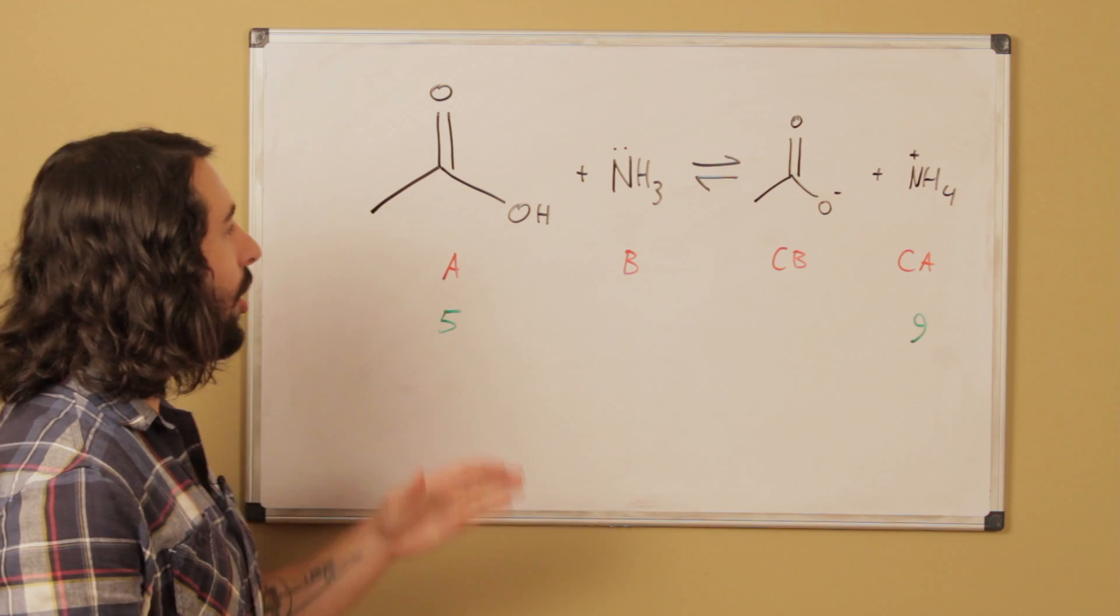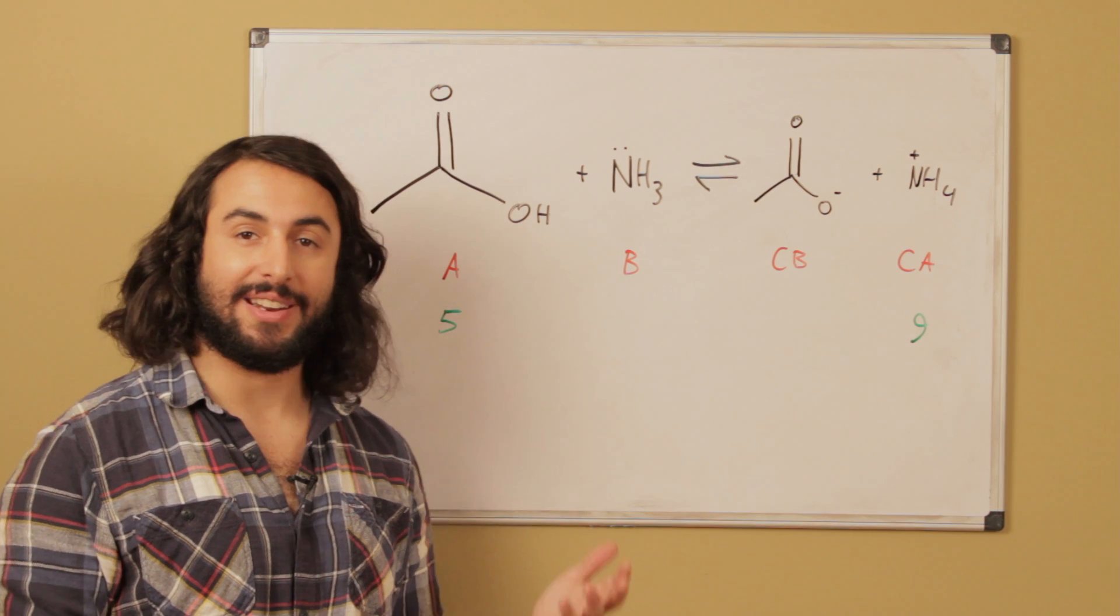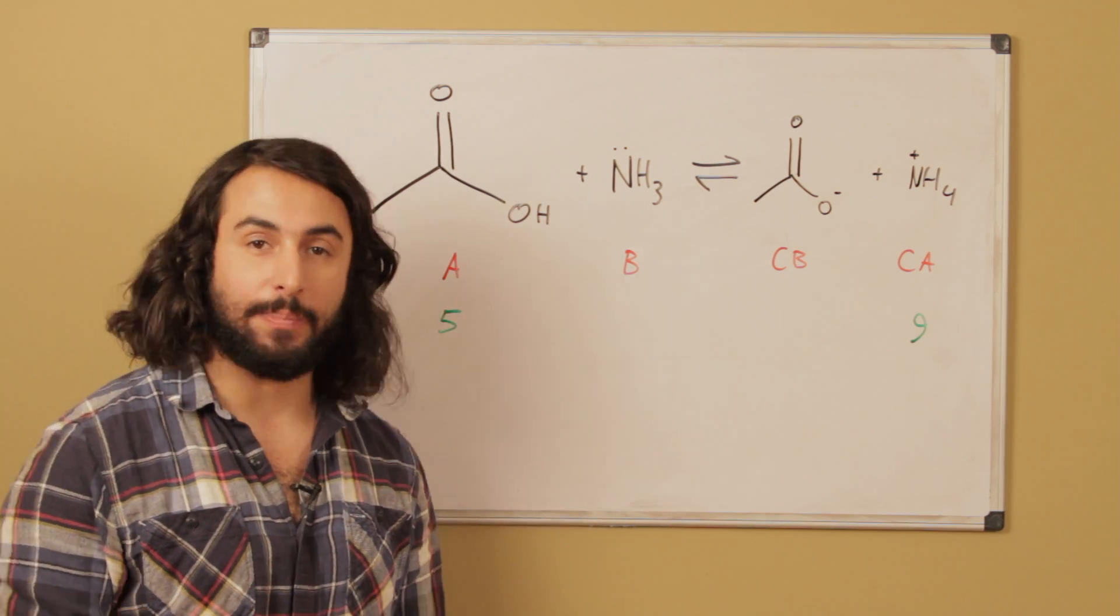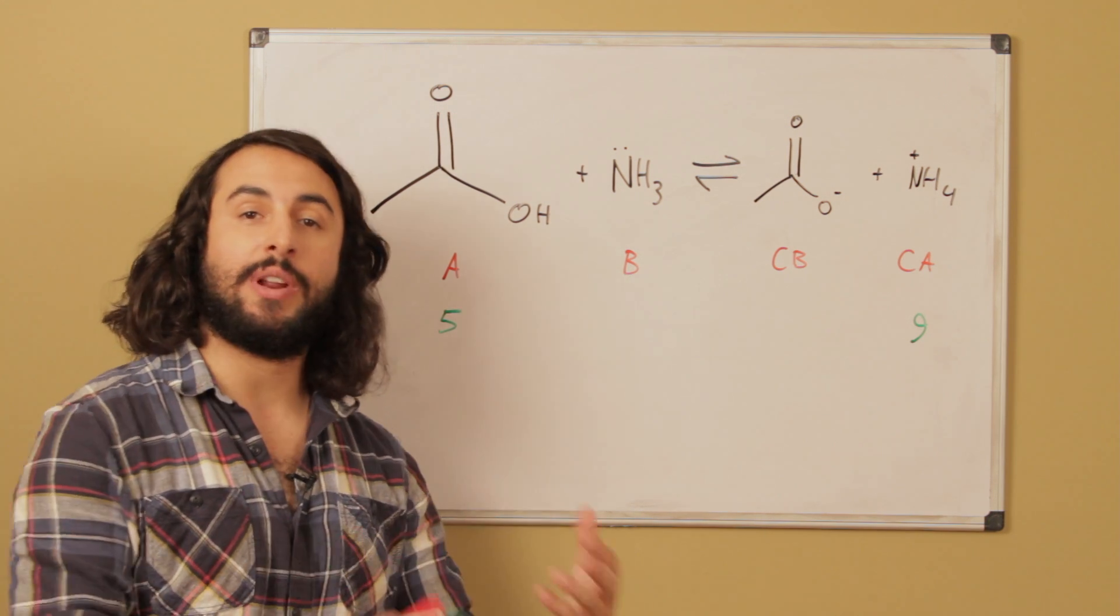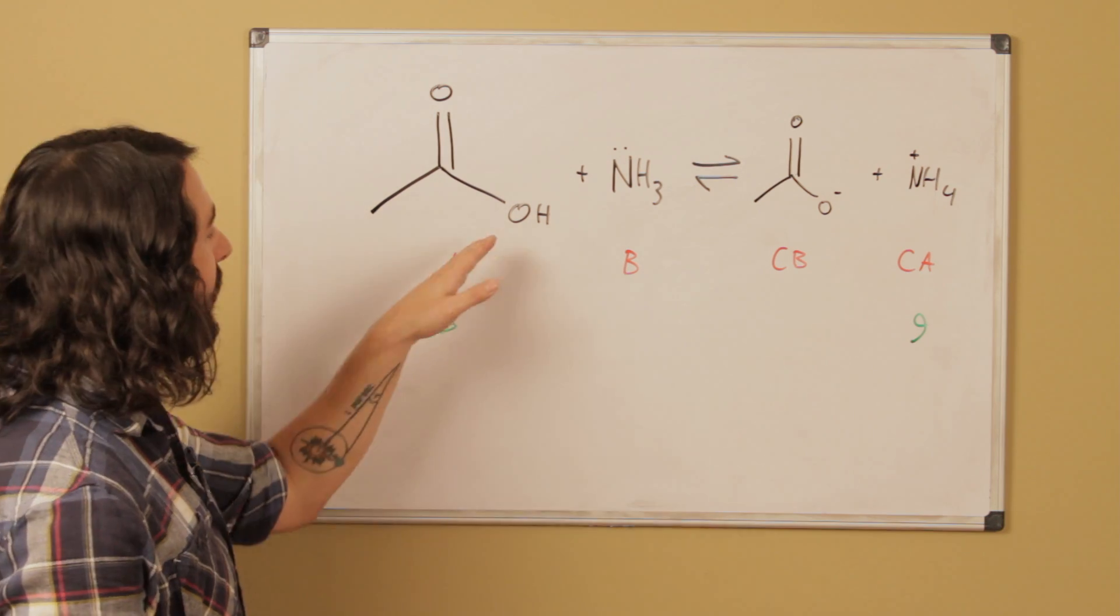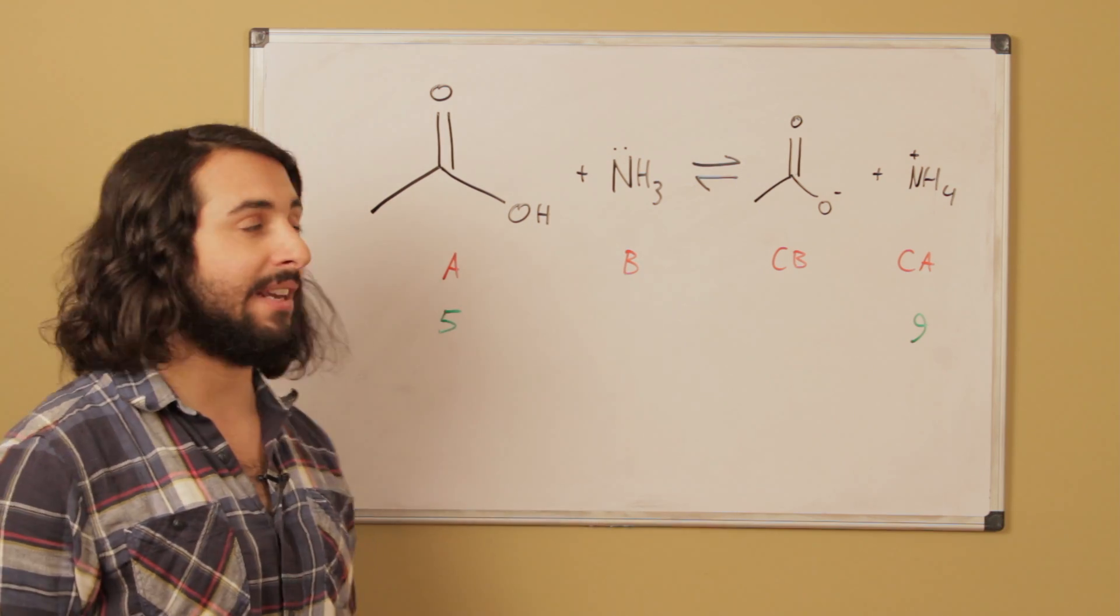Given that this is a carboxylic acid, that's a dead giveaway it's going to behave as the acid, and therefore ammonia is going to act as the base. Remember, a Bronsted-Lowry acid is always donating a proton and a Bronsted-Lowry base is always accepting a proton.